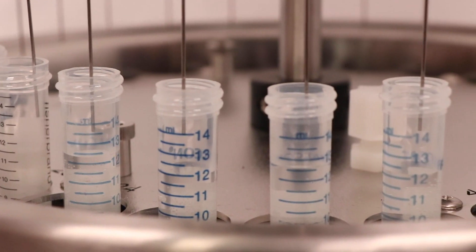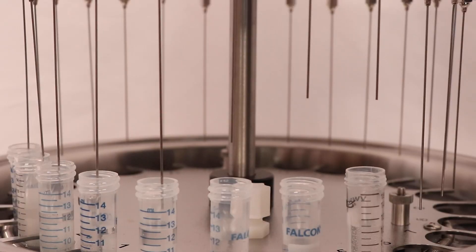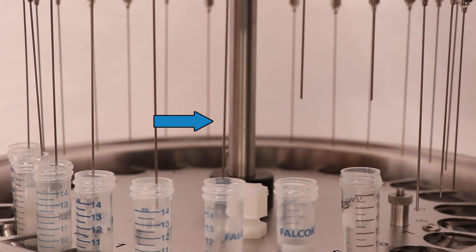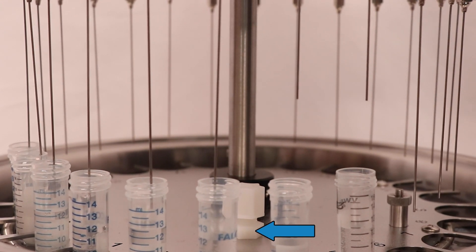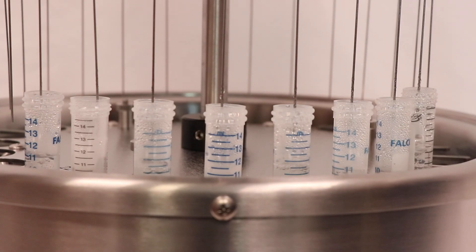Some nitrogen evaporators utilize a dry block instead of a water bath for the heat source. The gas delivery needles are then positioned to be just above the surface of the solvent. The gentle stream of nitrogen should create a dimple on top of the sample. The samples will remain in this position until they are concentrated down to the desired level.